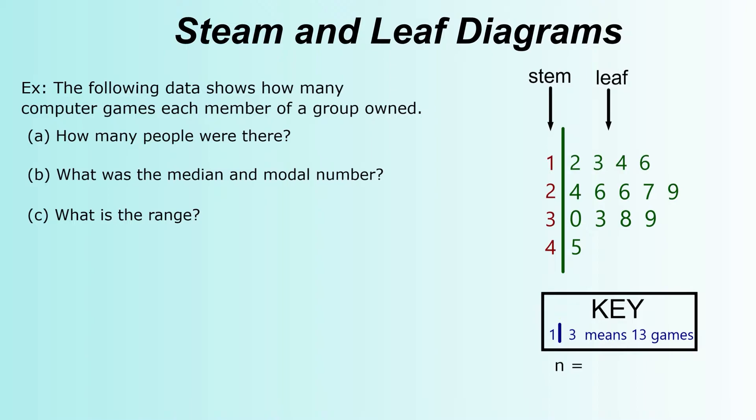The numbers on the leaf section always have to be ordered in a completed stem-and-leaf diagram. So you'll notice that in each row the numbers are ordered. In the first row, these are all our 10s numbers. In the second row, you've got the 20s, third row is the 30s, and fourth row is the 40s.